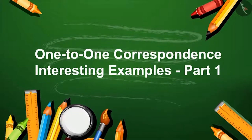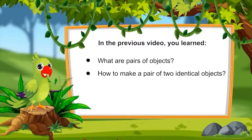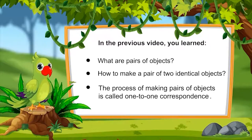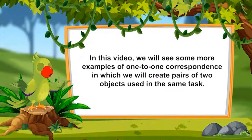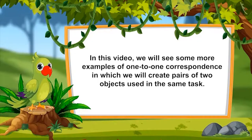1 to 1 Correspondence - Interesting Examples, Part 1. Children, in the previous video you learned what pairs of objects are and how to make a pair of two identical objects. This process of making pairs of objects is called 1 to 1 Correspondence. In this video, we will see some more examples of 1 to 1 Correspondence, in which we will create pairs of two objects used in the same task.